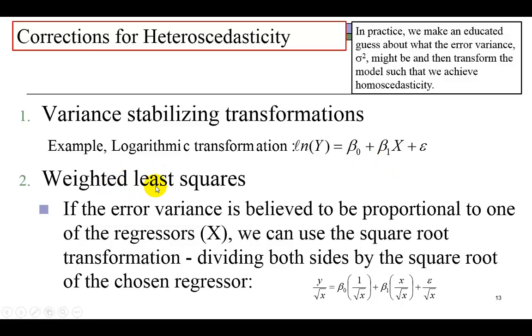Weighted least squares is a bit of a personal judgment in terms of knowing, making an educated guess about what the error variance might be, and then we carry out a specific transformation accordingly. In this case, if we believe that the error variance is proportional to one of the independent variables, then we can use, as in this example, the square root of that X variable by dividing both sides of the regression equation by the square root of that chosen independent variable.